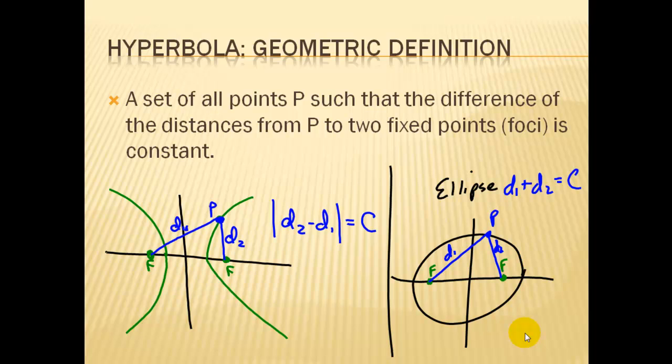In this case, we have the set of points such that the difference of the distance between two foci is constant. So we get a set of points on one side where the distance is a constant and a set of points on a second curve.